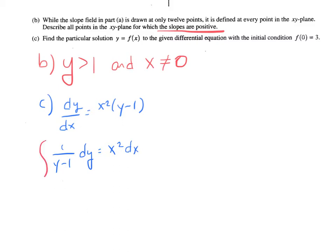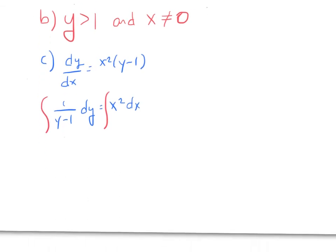And we integrate. And then they tell us that f(0) is equal to 3. So we have the ln of (3 - 1), which is 2. The absolute value of 2 is 2.